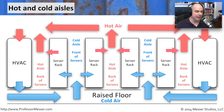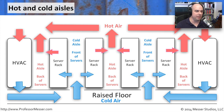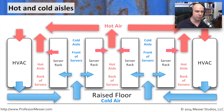Back-to-back aisles are our hot aisles — that's where all the hot air is coming out. It rises to the top of the building, where it will then be pulled back down through our air conditioning systems, cooled again, and sent back through the raised floor.